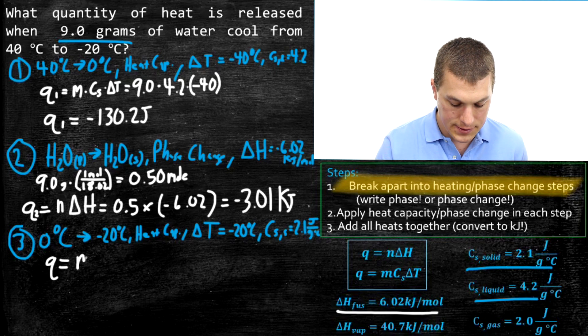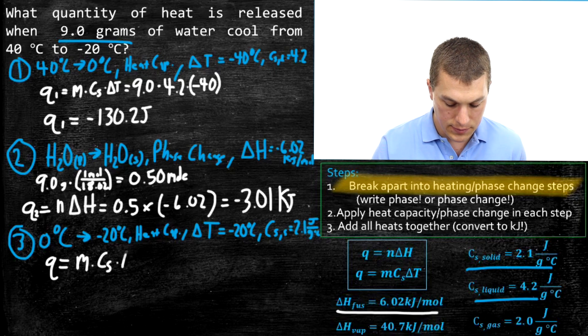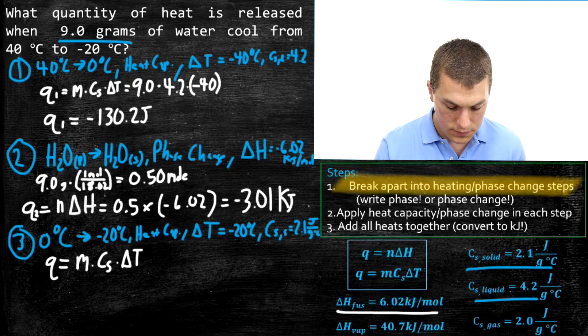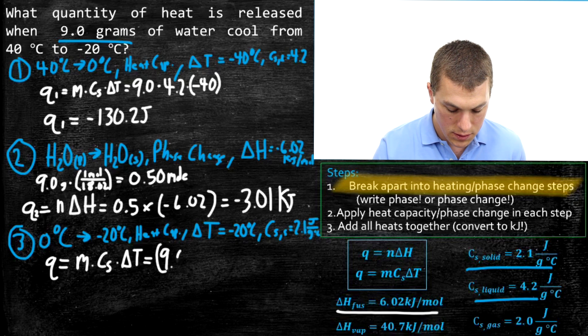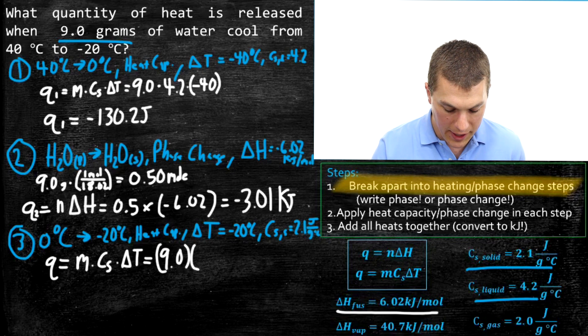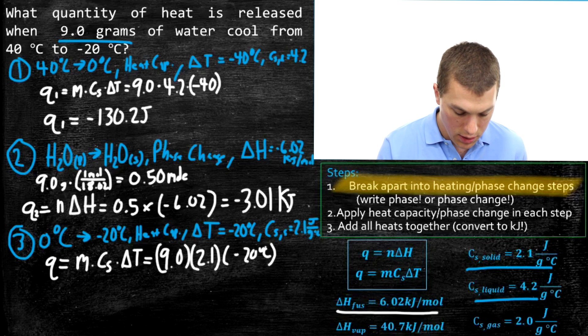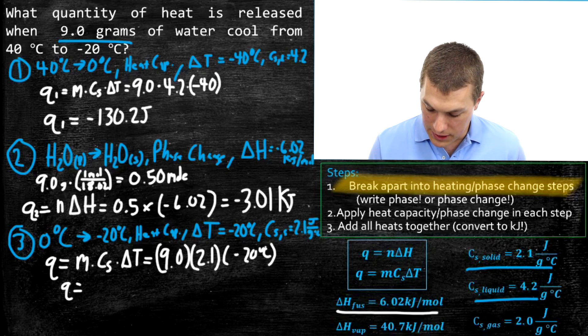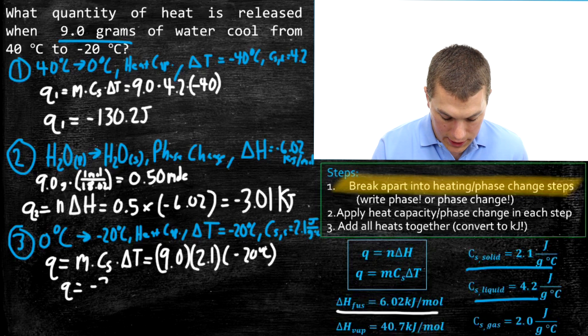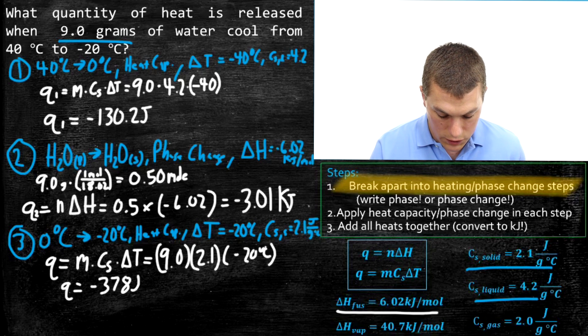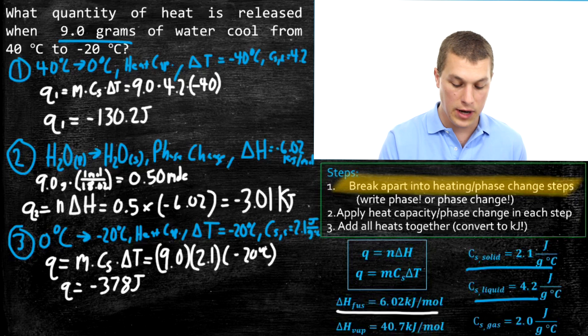So now I'm ready to plug everything in to my heat capacity equation, which is once again mass times heat capacity times delta t. I'm going to do nine for my mass times my heat capacity which is 2.1 times my delta t which is minus 20 degrees Celsius. When I multiply them all together, I'm going to get out negative 378 joules. Joules because my heat capacity is in joules. Alright, I'm almost done with the problem.